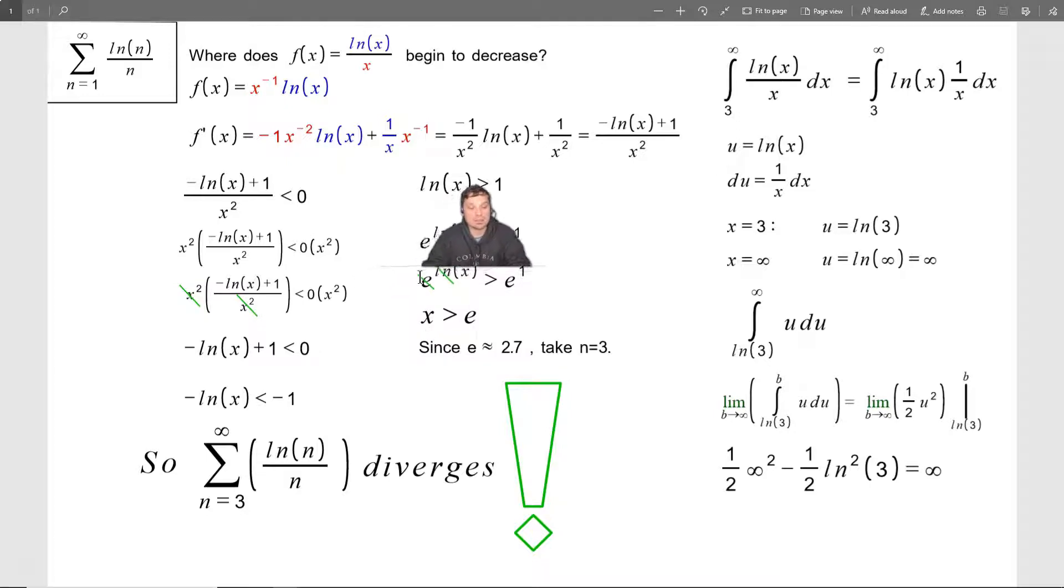Next, I'm going to have that ln of x therefore has to be greater than 1. Just divide through by negative 1, flip the direction of the inequality the usual way. And now to solve this for x, I need to exponentiate both sides. So it becomes e to the ln of x is greater than e to the 1.